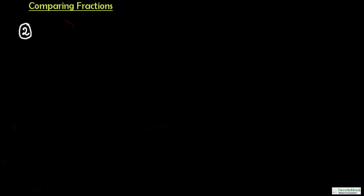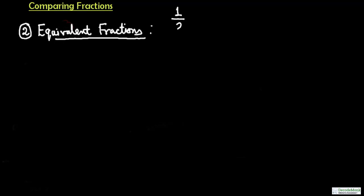In the last class, we talked about something called equivalent fractions. We took the example 1 upon 2 and 2 upon 4. We saw that though the numerator and denominators are different respectively, these two fractions are still the same. We arrived at that conclusion by drawing a picture of a rectangle, but we can also arrive at these conclusions mathematically.